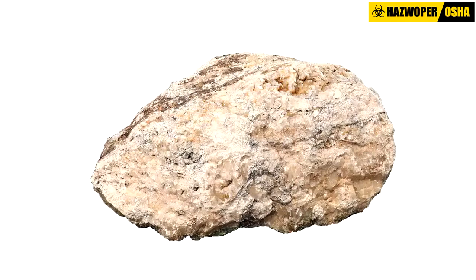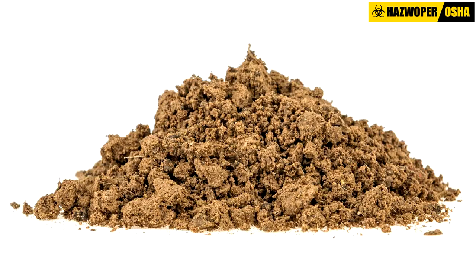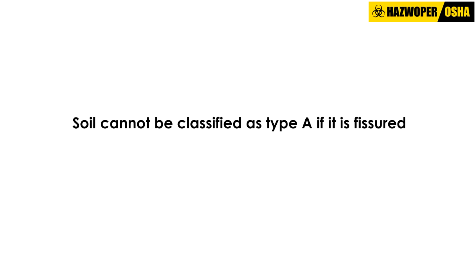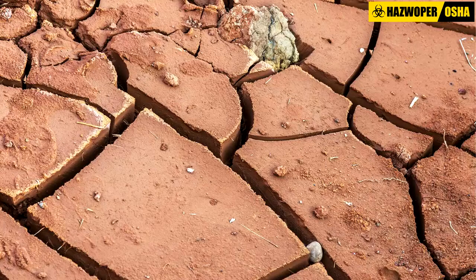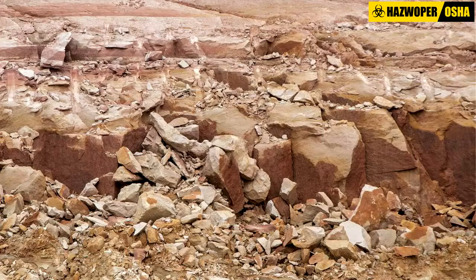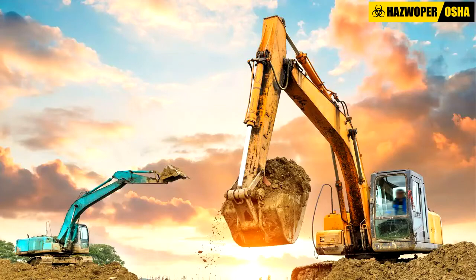Type A soil is cohesive and has a high unconfined compressive strength of 1.5 tons per square foot or greater. Examples of type A soil include clay, silty clay, sandy clay, and clay loam. Soil cannot be classified as type A if it is fissured, if it has been previously disturbed, if it has water seeping through it, or if it is subject to vibration from sources such as heavy traffic.